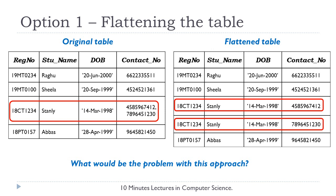Look at the original table on the left-hand side — the register number is the key for this table. But after flattening, the register number cannot be the key anymore because register number 18CT1234 is repeated and appears twice, so it has duplicates. The table cannot have the register number as the key anymore. This is the problem with flattening the table — the primary key gets disturbed.